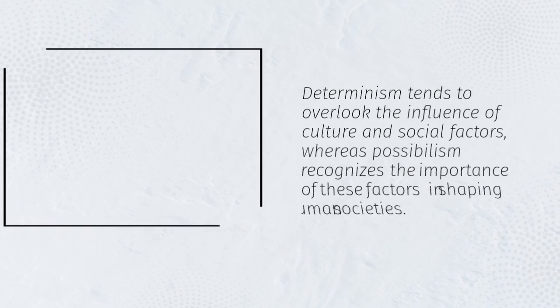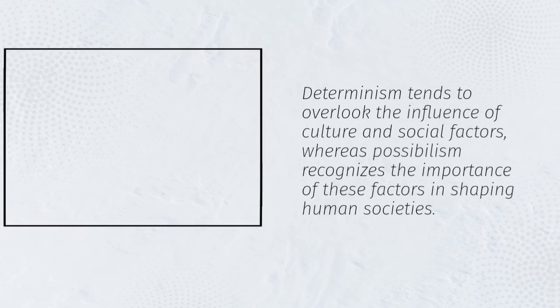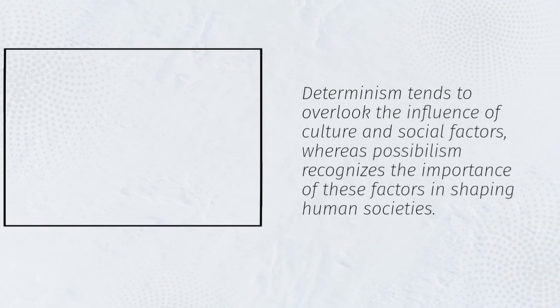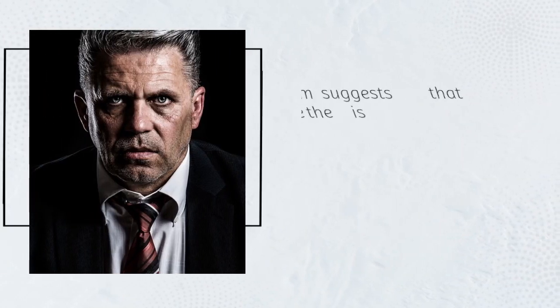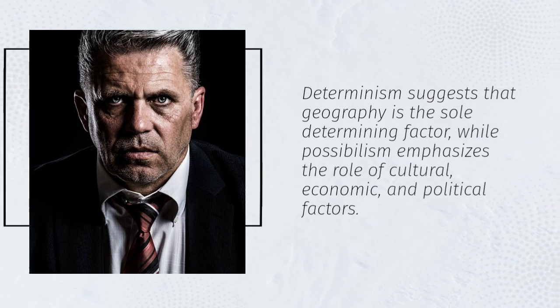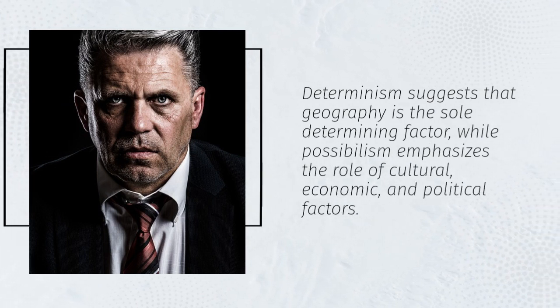Determinism tends to overlook the influence of culture and social factors, whereas possibilism recognizes the importance of these factors in shaping human societies. Determinism suggests that geography is the sole determining factor, while possibilism emphasizes the role of cultural, economic, and political factors.